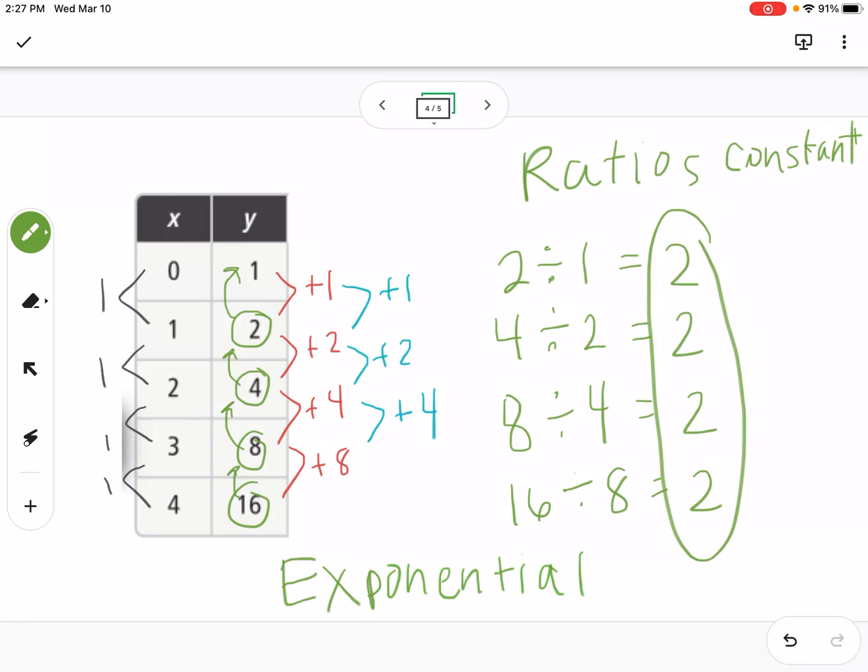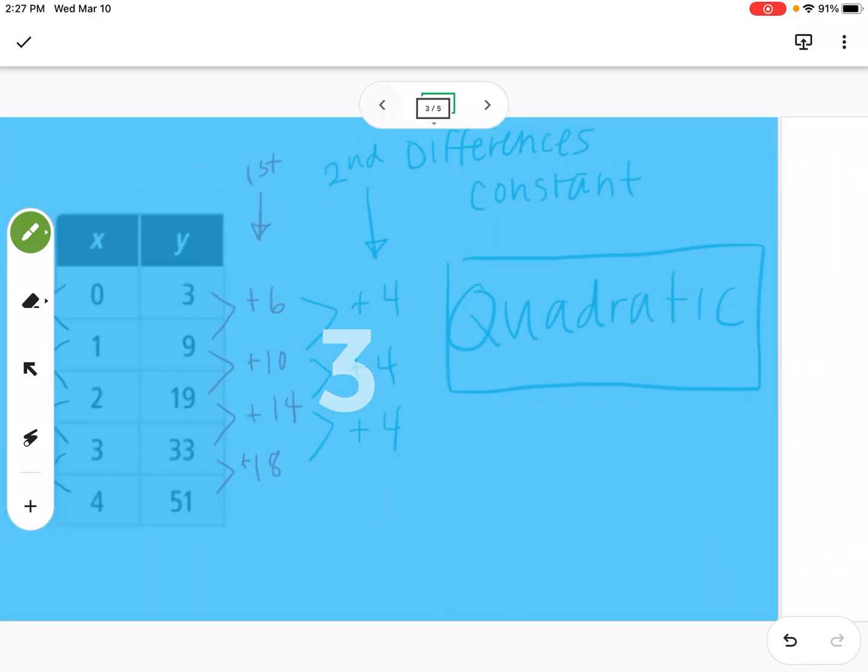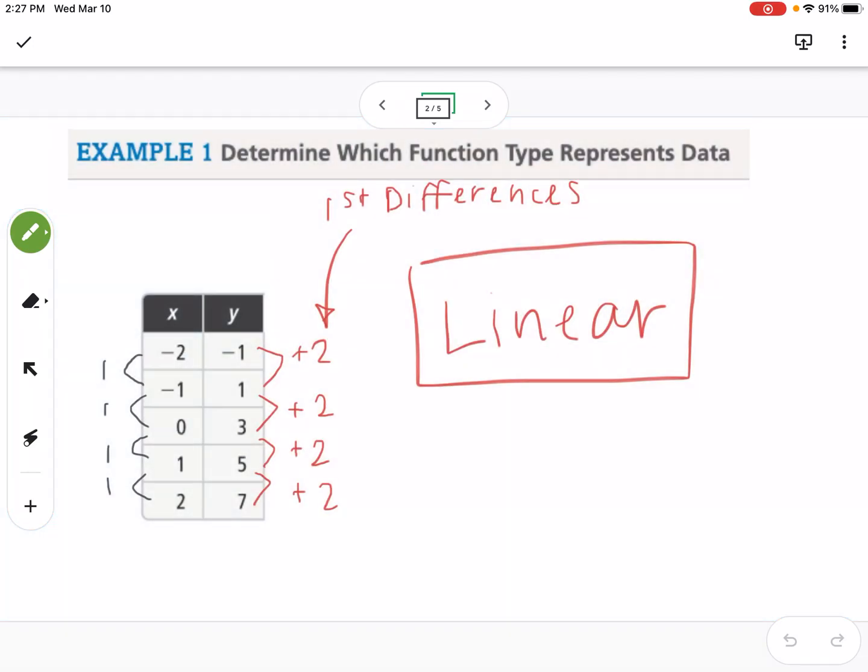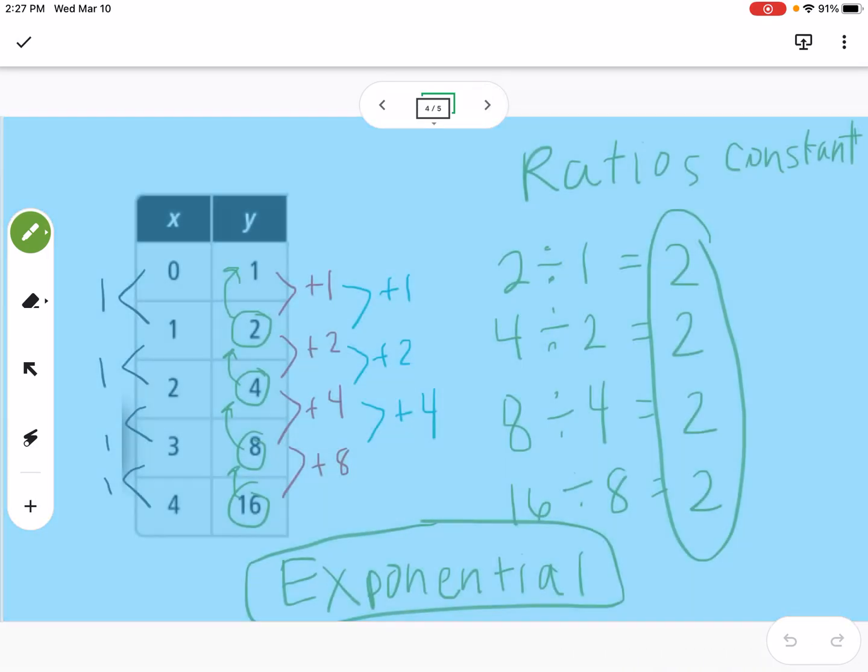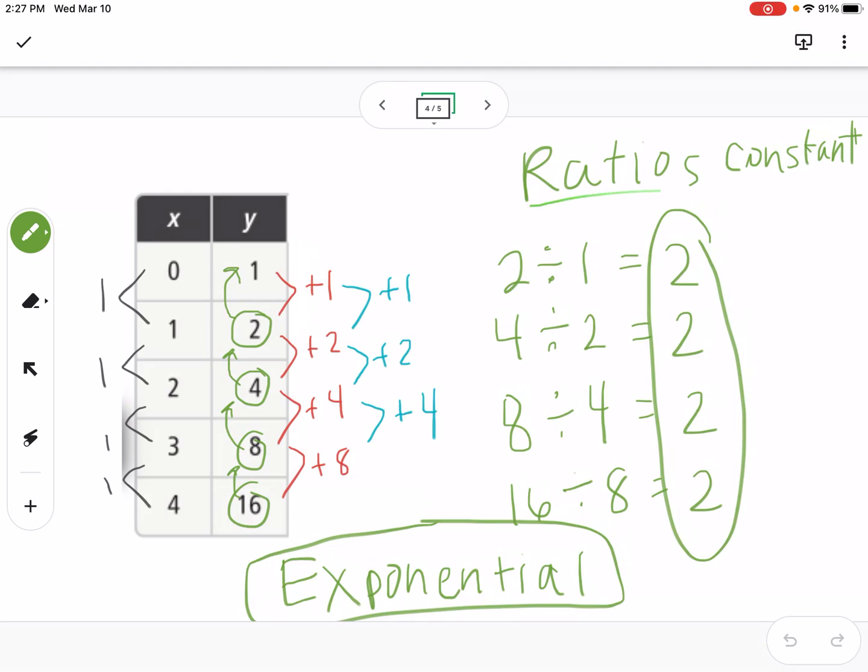So again, just to go over the three different types here, constant first differences mean it's linear, constant second differences mean it's quadratic, and constant ratios means that it's exponential. So those are the three types of functions that we've talked about throughout this whole entire year, so this kind of summarizes those different ideas.